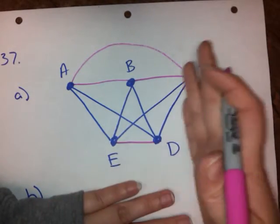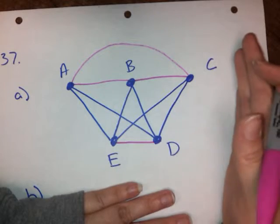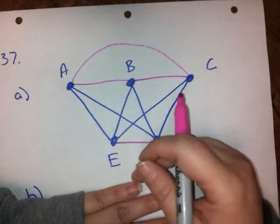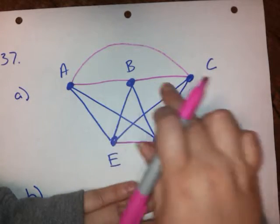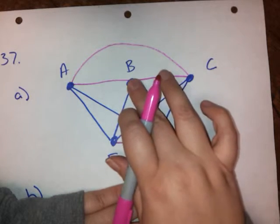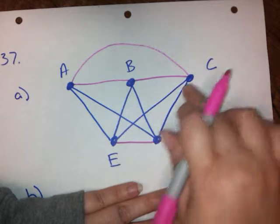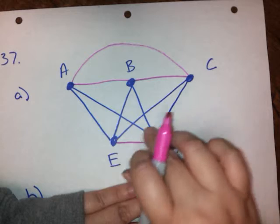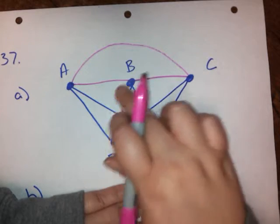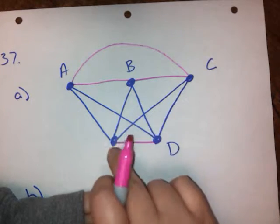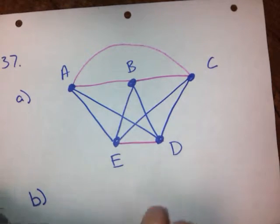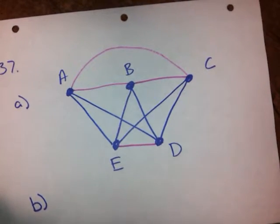Again, a complete graph is just every vertex is adjacent to every other vertex. That means there's an edge between A and all of the other vertices. There's an edge between B and all of the other vertices, between C and all other vertices, between D and all other vertices, and between E and all other vertices. So we've got a complete graph now.